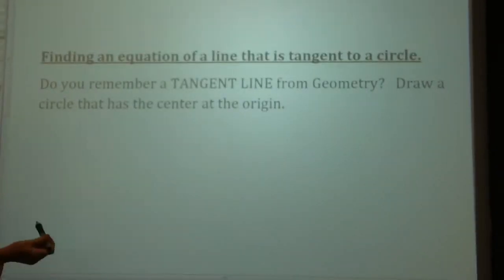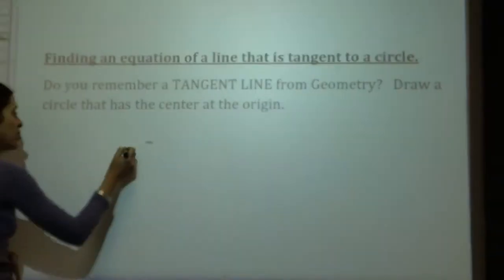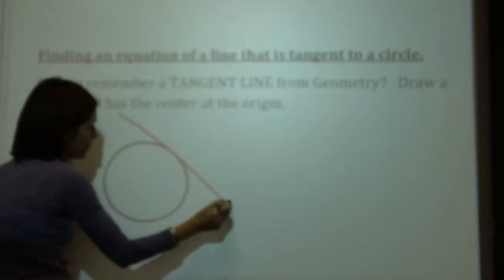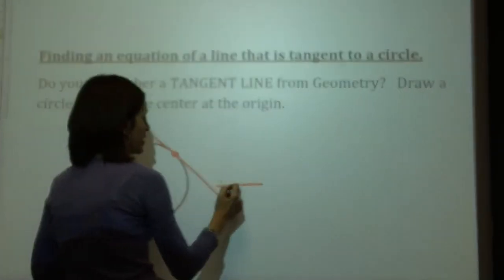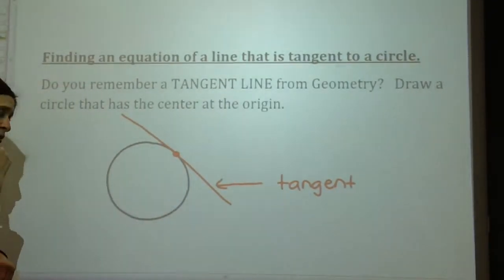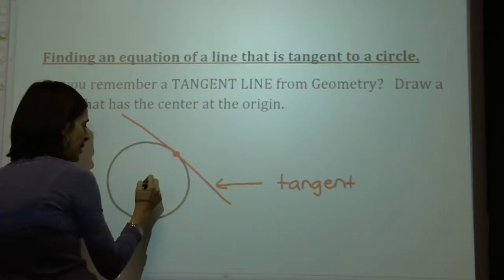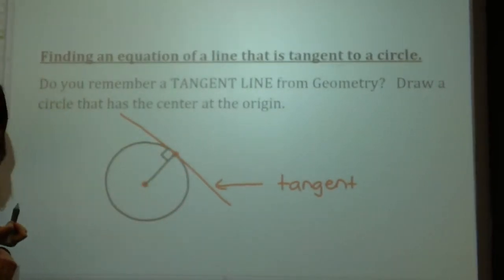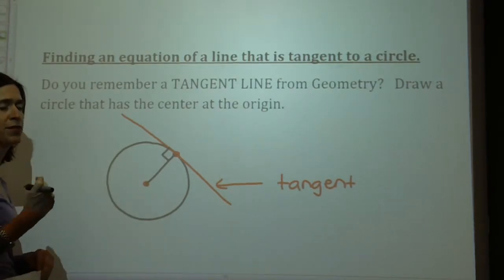I'm hoping you remember a couple of things from geometry about circles. We're going to talk about a special line that touches a circle — it's called a tangent line. In geometry, a tangent line is a line that touches a circle in one place on the outside; it doesn't go through it. And if you draw a radius to a tangent, it creates a right angle — they are perpendicular.